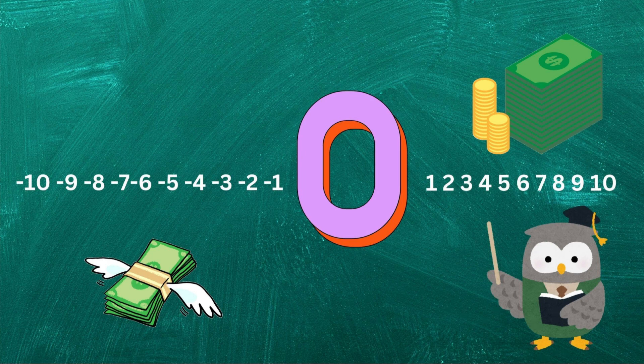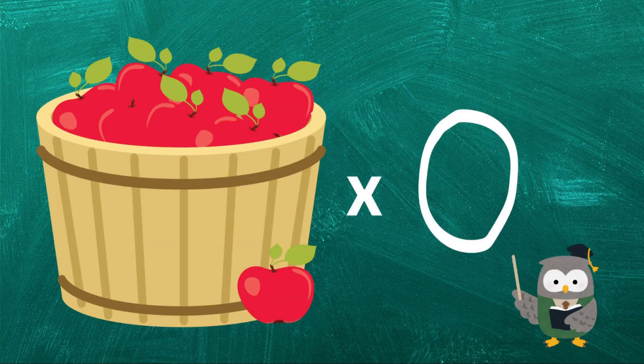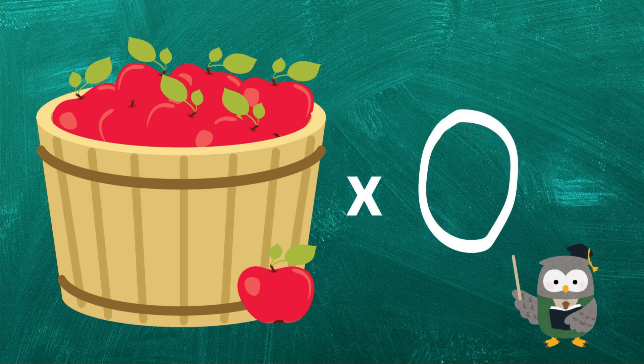And let's not forget multiplication. Any number multiplied by zero equals zero. This might seem strange at first, but it makes sense if you think about it. If you have zero groups of something, you have nothing at all.